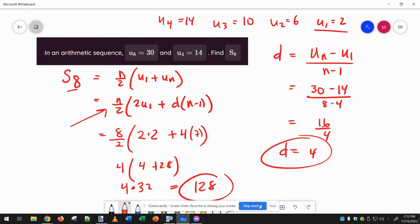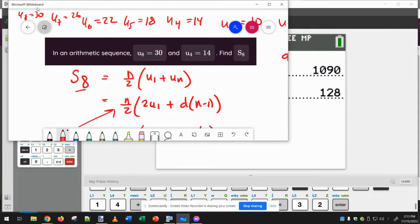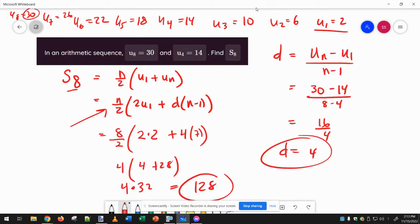You could also, now that I know I have 2, 6, 10, 14, u5 would be 18, u6 would be 22, u7 would be 26, and u8 I know is 30. So now I could just add up all eight terms that I have right here, if the formulas are too confusing. And you should get the same thing.